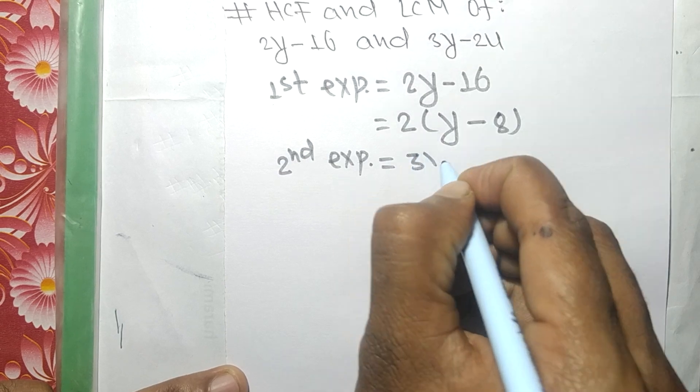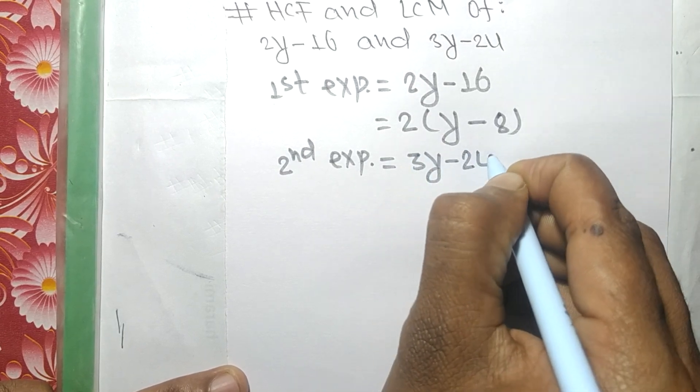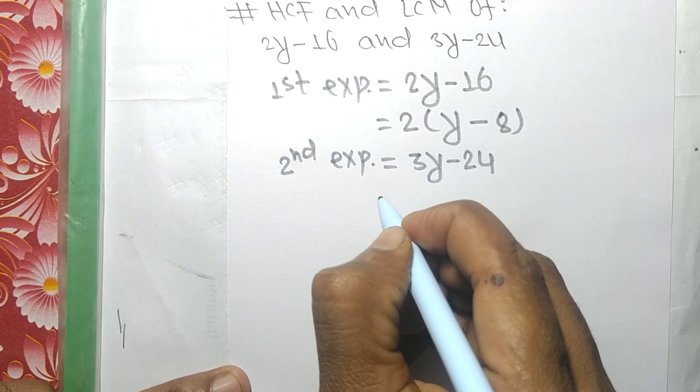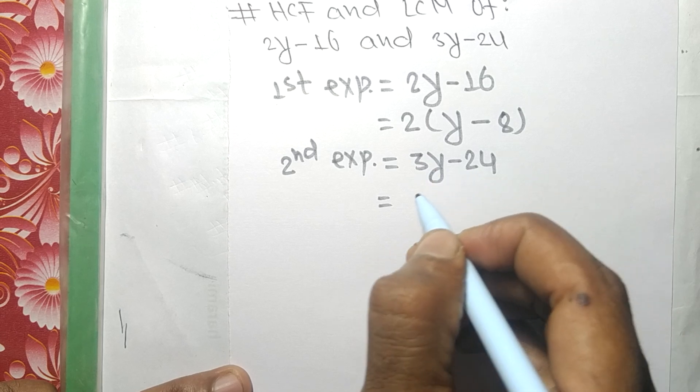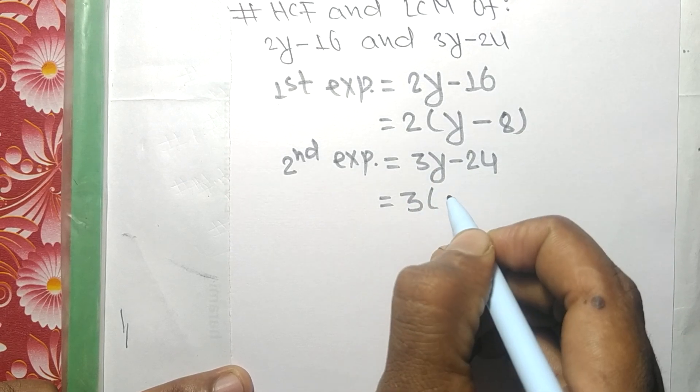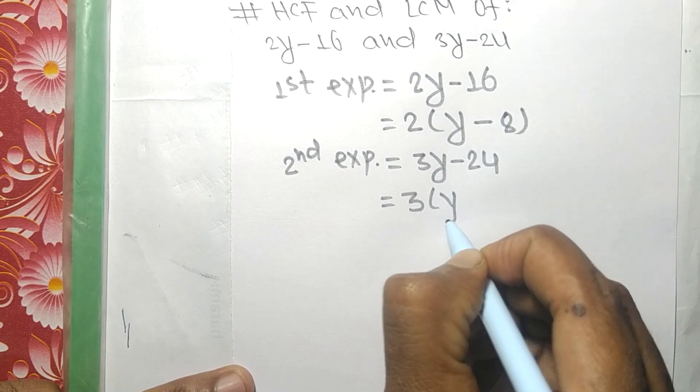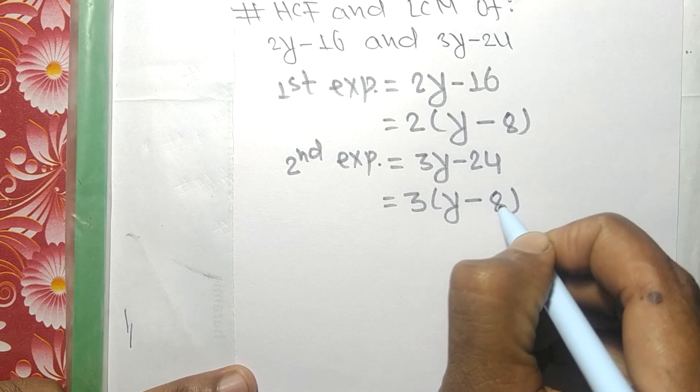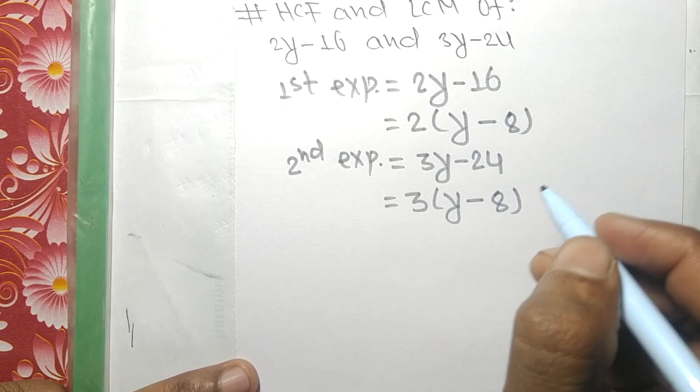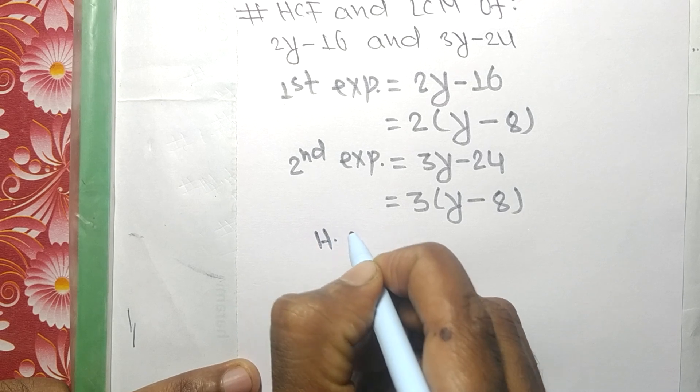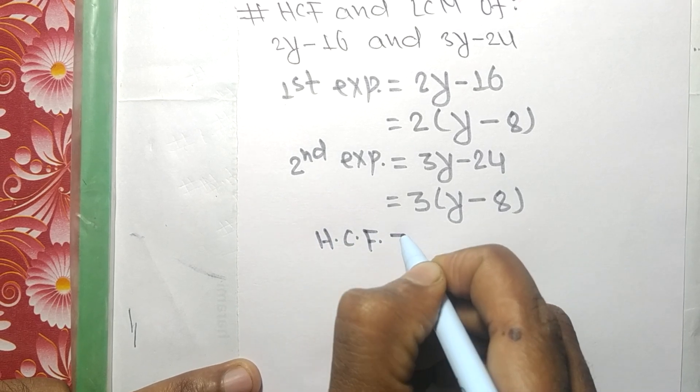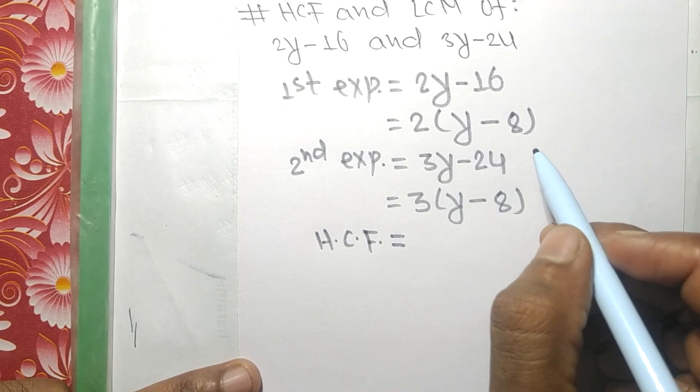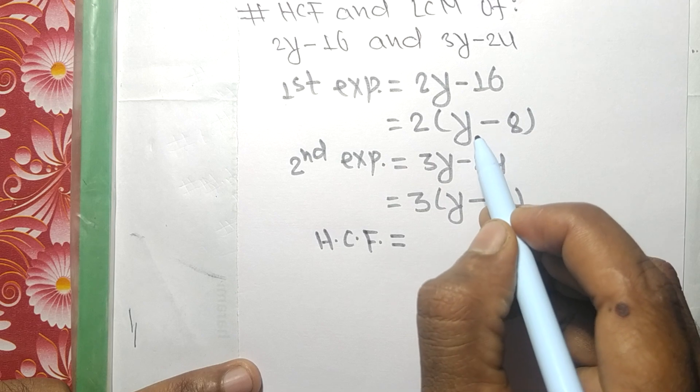We have 3y minus 24. Common in these both is 3, so remaining in the first is y minus 8, since 3 times 8 equals 24. Now the HCF is equal to...